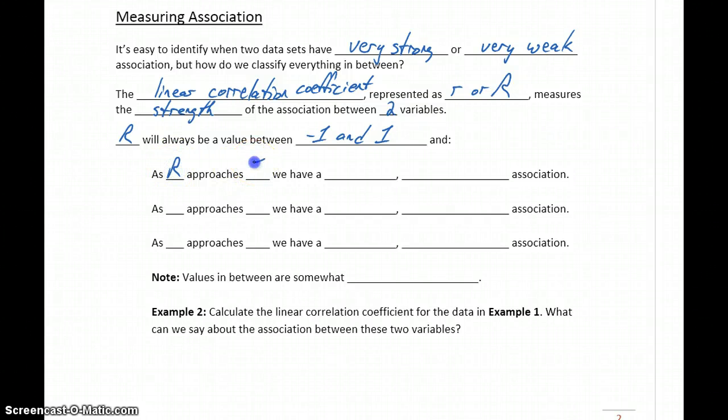So as r approaches positive 1, we have a strong, positive, linear association. The closer that number is to 1, the stronger our association is. We know it's a linear association, and since it's approaching positive 1, we have a positive association.